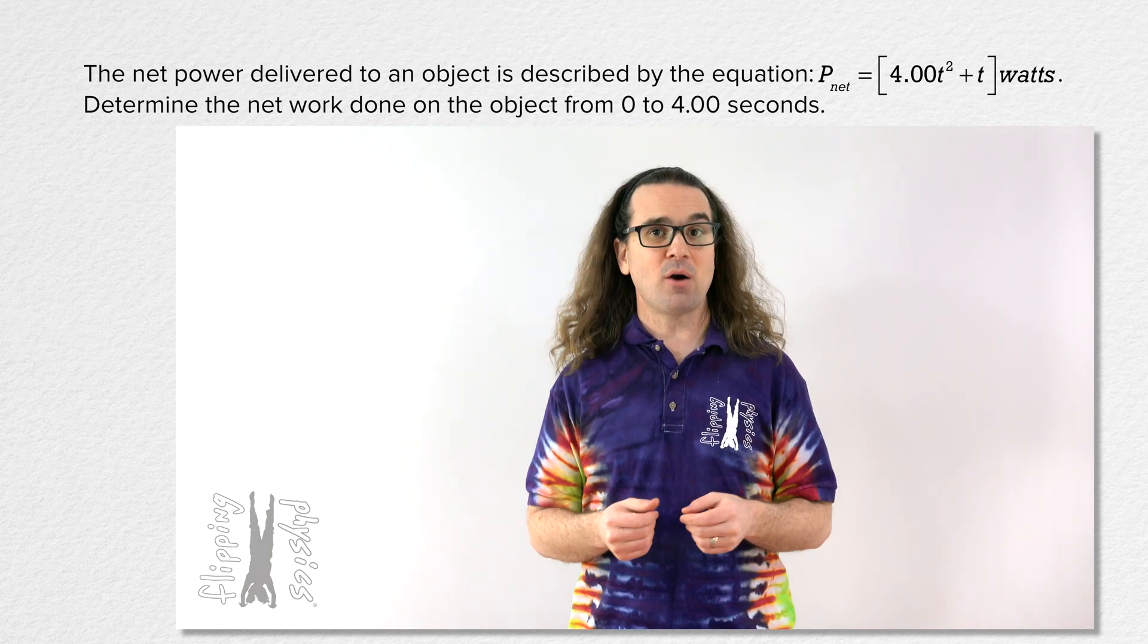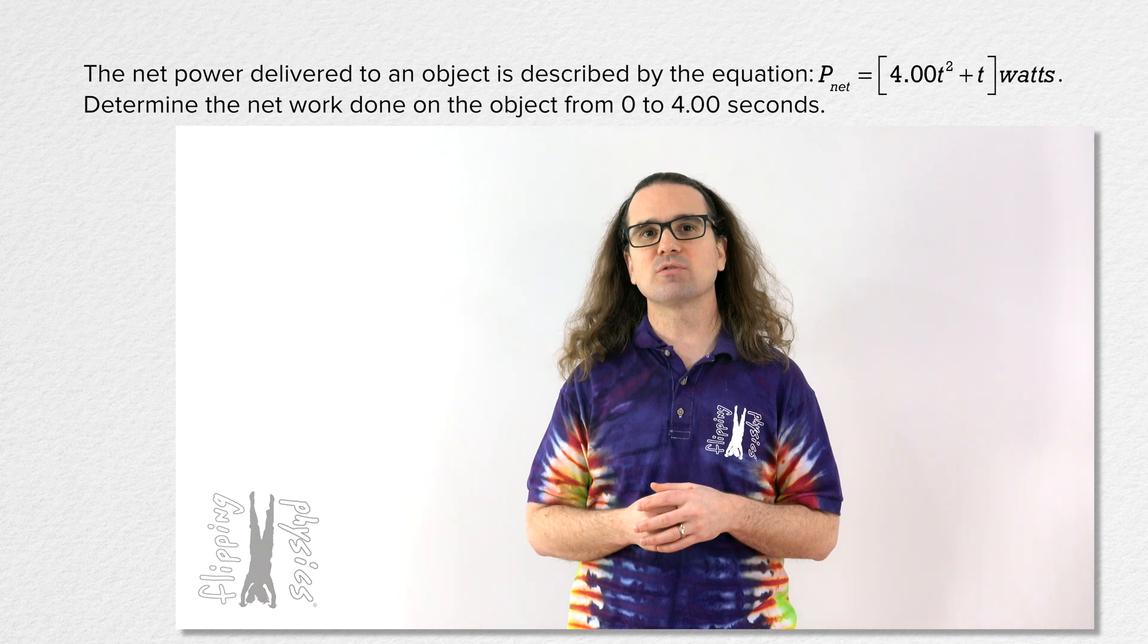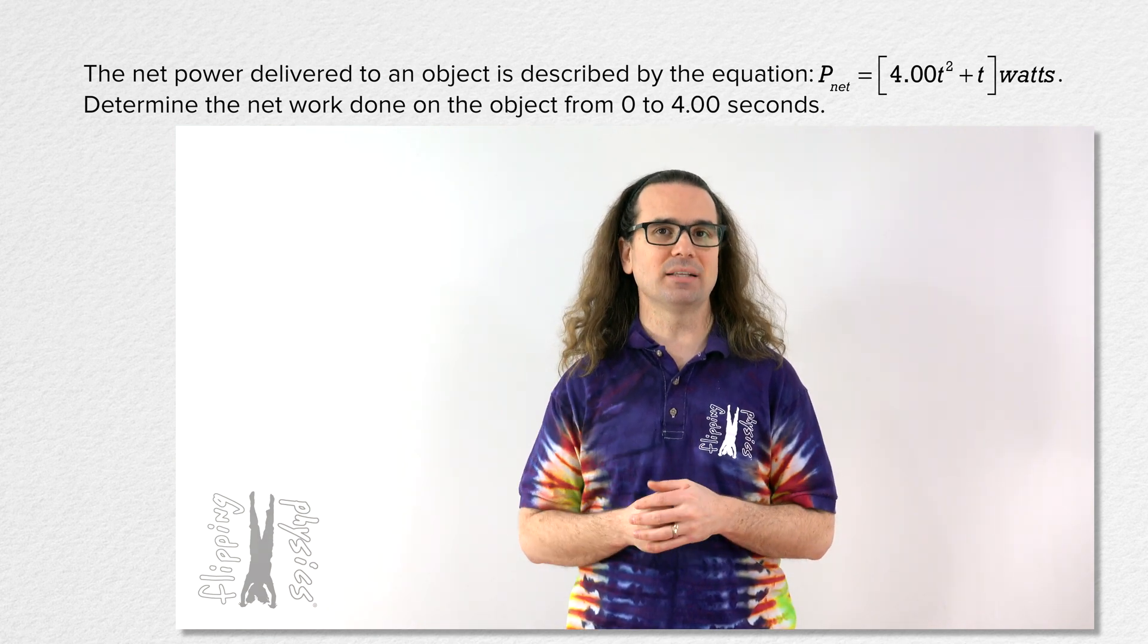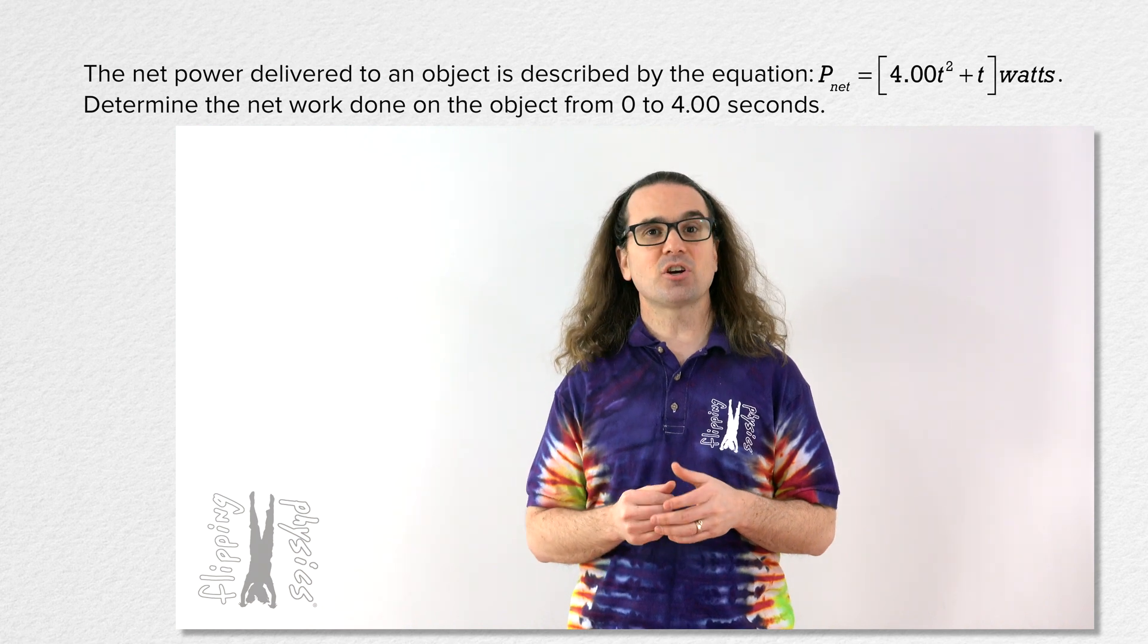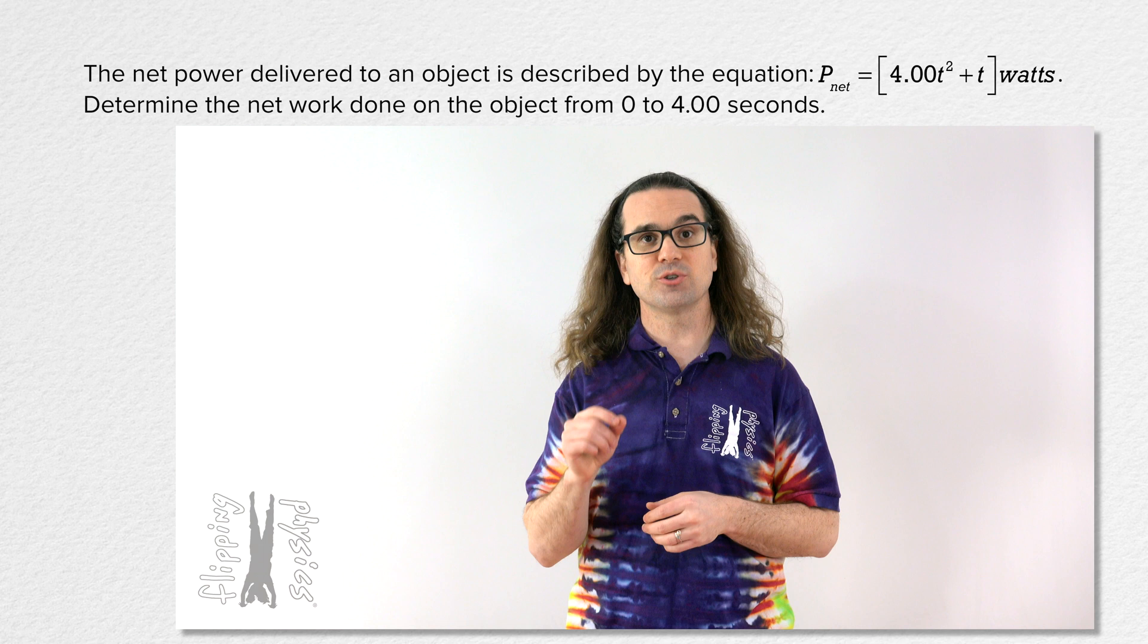Good morning. The net power delivered to an object is described by the equation net power equals 4.00 times time squared plus time in watts. Bobby, please determine the net work done on the object from 0 to 4.00 seconds.